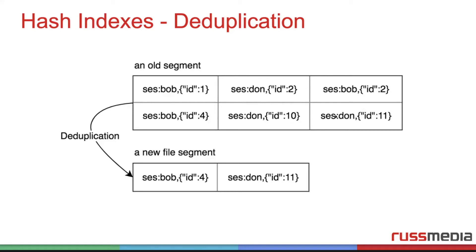So there is a process called compaction, which creates a new file segment with only the up-to-date keys. So we take the last one — for Don, ID 11 — and the last one for Bob, ID four — and now we create a new file segment. But if we do this for a long time, we could have even more problems because maybe in this old segment another user isn't even in there. So we have a lot of these segment files which we need to search as well.